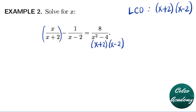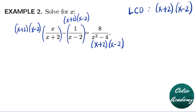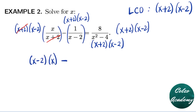We multiply each fraction by the LCD (x+2)(x-2). For the first fraction, we cancel (x+2) and are left with x times (x-2). For the second fraction, we cancel (x-2) and are left with negative 1 times (x+2). For the right side, we cancel both (x+2) and (x-2), leaving just 8.